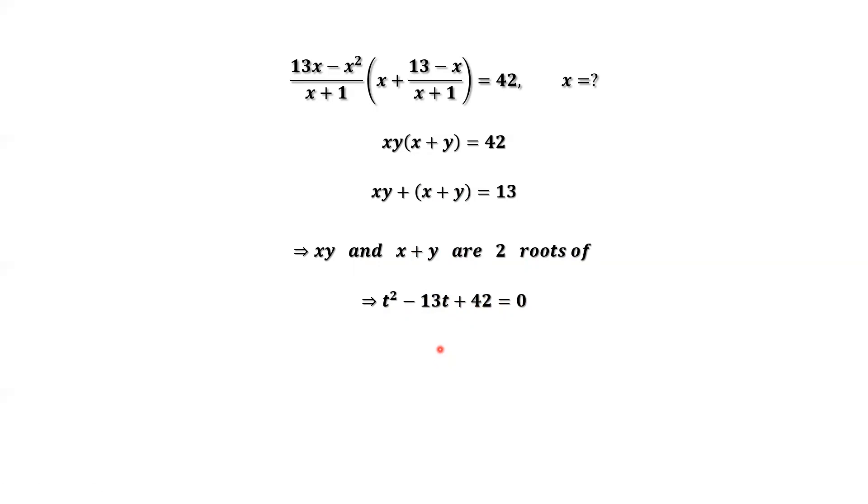We can factor the left-hand side of this equation. This implies t minus 6 times t minus 7 equals 0. You can also get this result using the quadratic formula. The two roots are t equals 6 or 7.